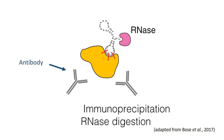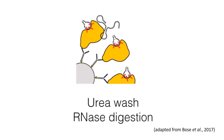After lysing the cells, the material from the cells is then treated with RNase, which degrades RNA not protected by an interaction with protein. Using an antibody, you can isolate the protein of interest and any RNA it interacts with. A second treatment with RNase gets rid of any unwanted RNA that is not bound to your protein of interest and allows for identifying specific binding sites.